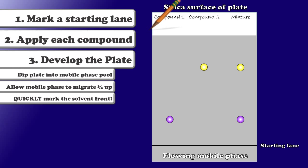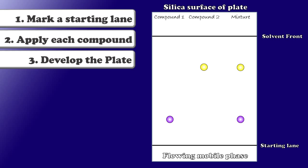At this point, my plate has finished developing. I have to quickly mark that solvent front because if I don't mark it rapidly, that solvent will eventually evaporate and it's very difficult to detect where it was at all. So now I have a developed TLC plate. And I can clearly see that my yellow compound has moved farther than my purple compound. So my yellow compound must be less polar.